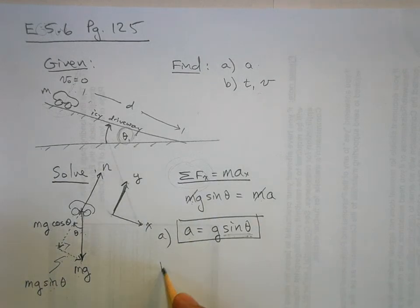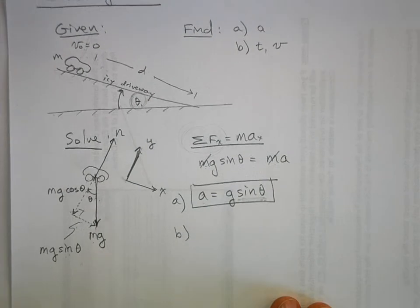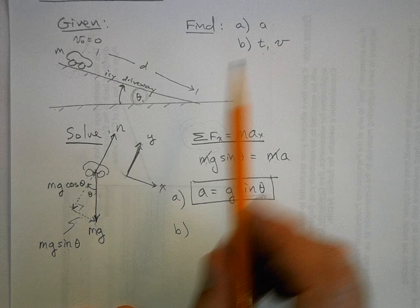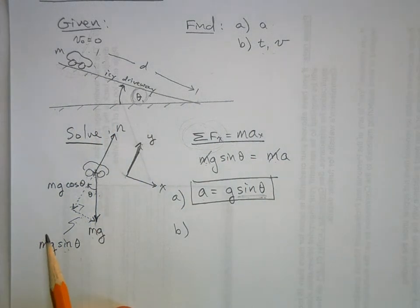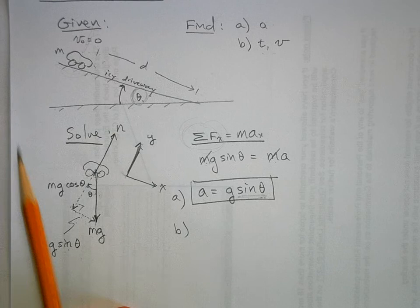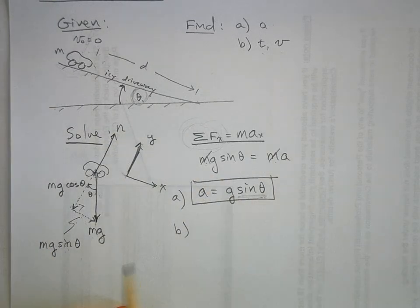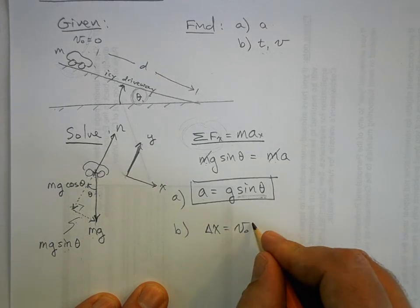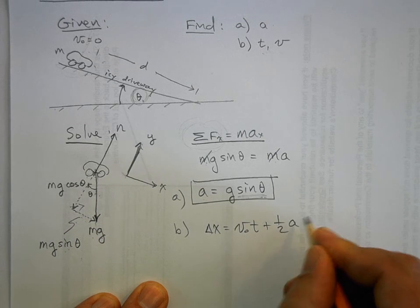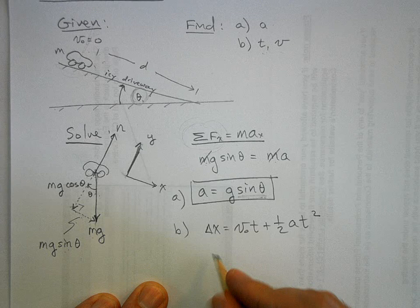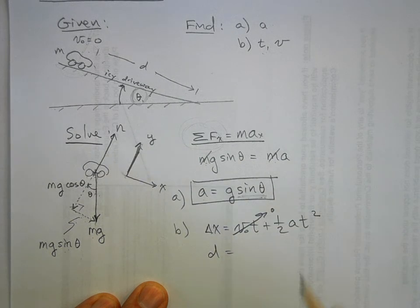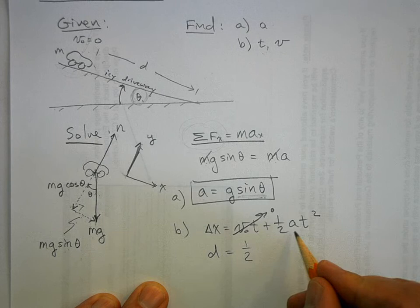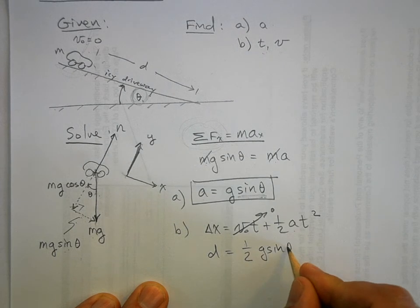Now for part b, now it just becomes a kinematics problem. I want to know the time it takes to get from here to here. What do I know? I know the distance, I know the initial velocity, I know the acceleration. I don't know the final velocity—I don't need to find it yet—so I'm going to use the third kinematic equation. Delta x equals v naught t plus one half a t squared.